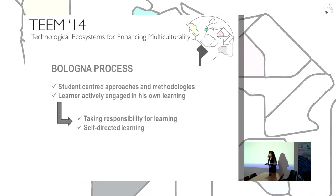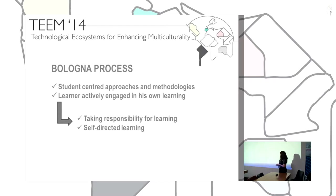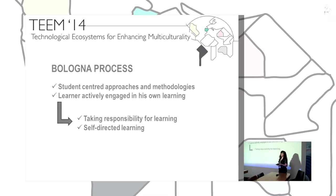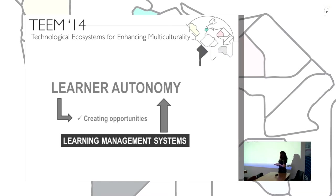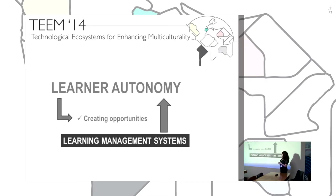The Bologna process tells us about student-centered approaches, about using them for teaching and learning, and also about having learners actively engage in their own learning. Students must take responsibility for their own learning and learn in a self-directed way, and that requires learner autonomy. Learner autonomy also requires opportunities, and that's the role of the teacher — creating these opportunities. Learning management systems can be helpful to promote learner autonomy.